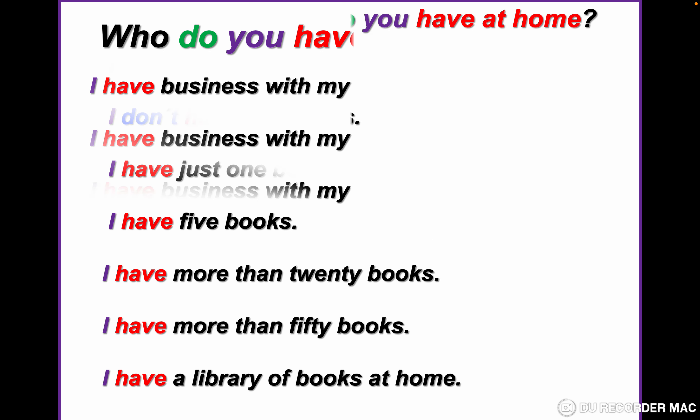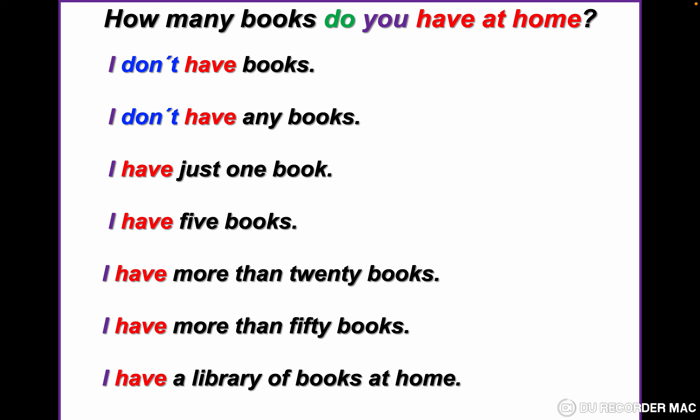Now we changed to 'how many'. How many books do you have at home? Notice that with 'how many', we don't have how plus auxiliary alone — this is an exception. 'How many' acts as one unit and always requires a noun in the plural form, for example 'books'. Possible answers: I don't have any books at home. I have just one book. I have five books. I have more than 20 or 50 books at home. I have a library of books at home.